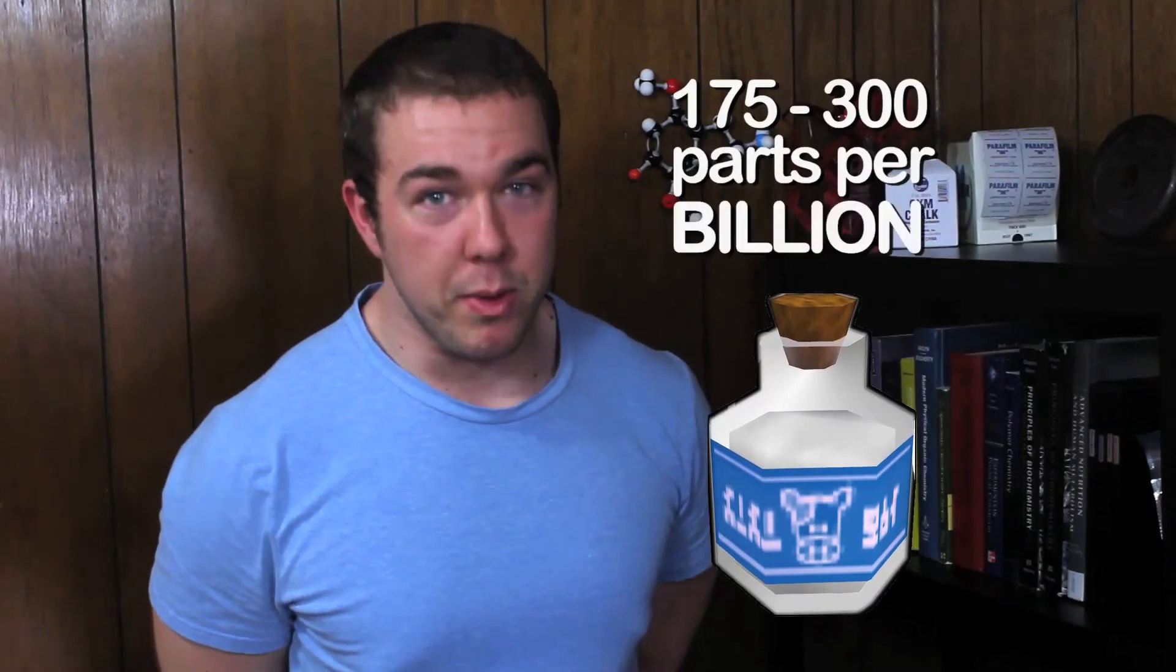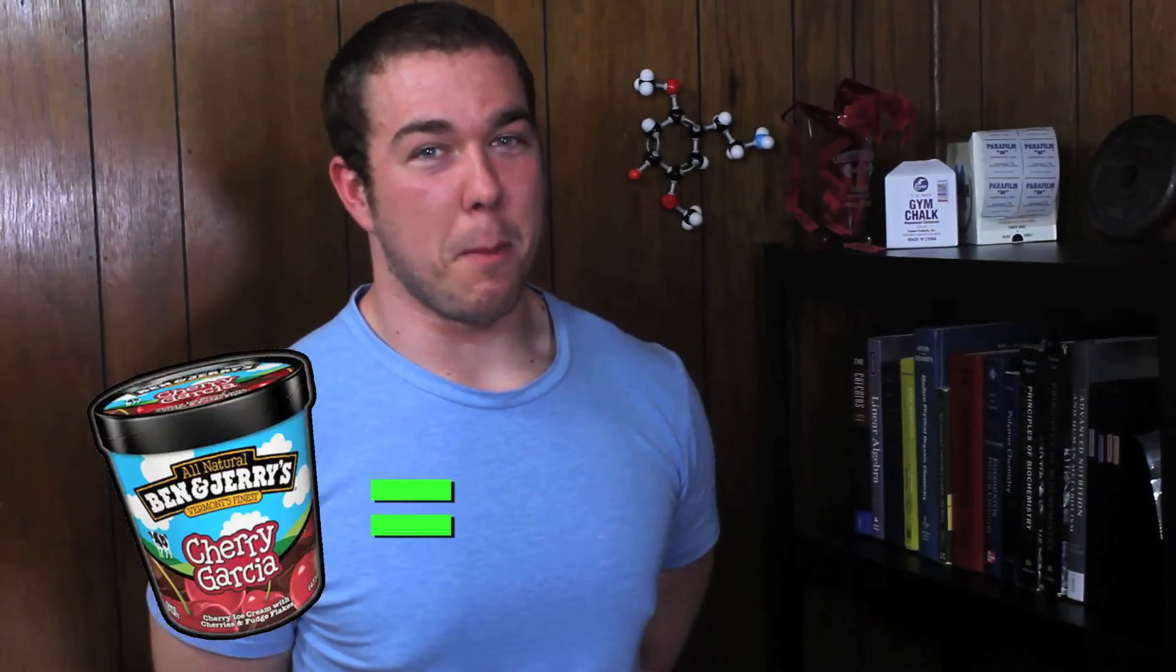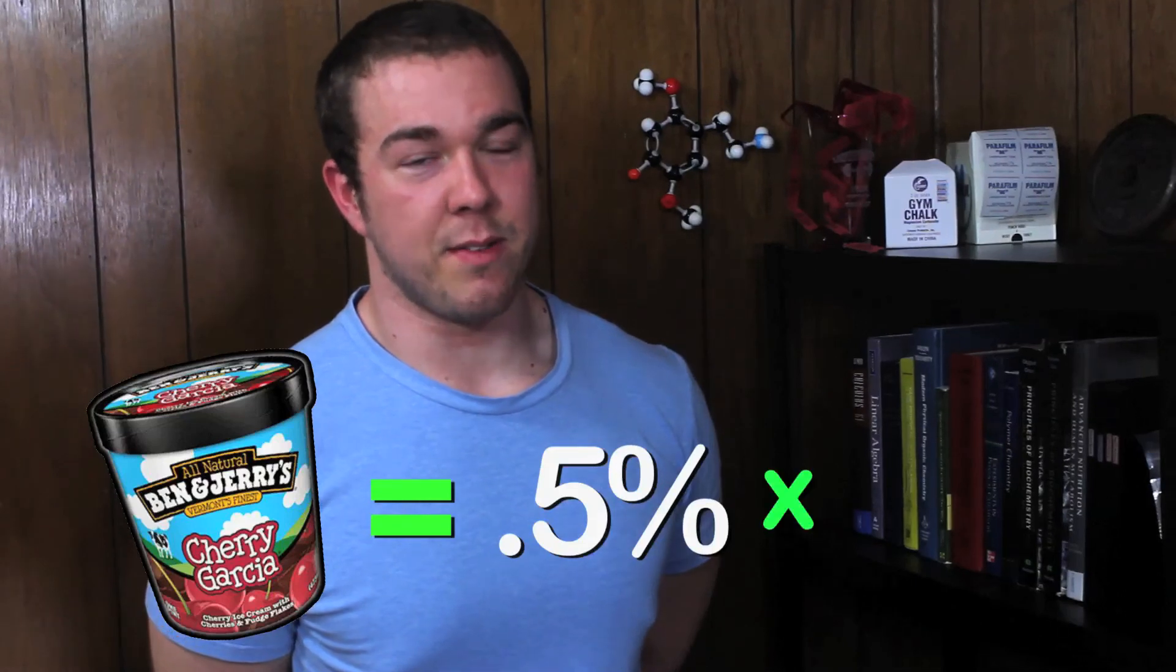Dairy, on average, contains about 175 to 300 parts per billion molecules of progesterone per serving. That's a thousand times higher than the dosages being discussed right now in the water supply.